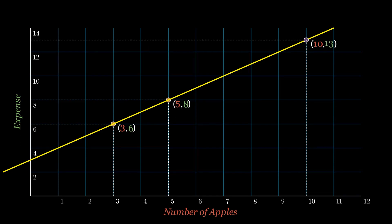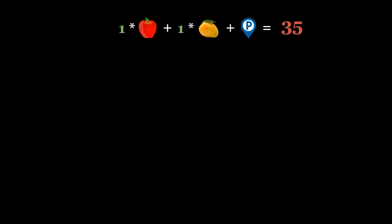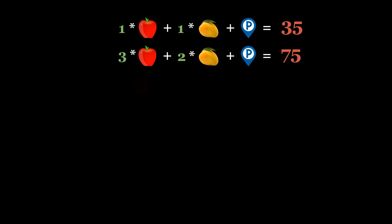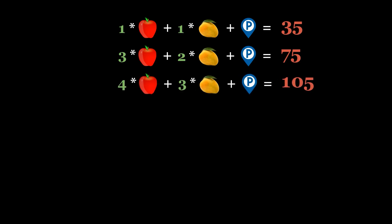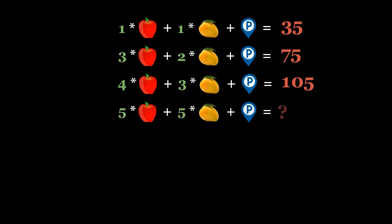Now let's level up the game — what if we had three variables in the equation? Imagine that we are buying apples and mangoes this time, and there is a parking charge on every trip. One apple and one mango costs you 35 dollars, three apples and two mangoes costs you 75 dollars, and four apples and three mangoes costs 105 dollars. Find out what the expenses will be for buying five apples and five mangoes.